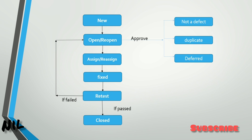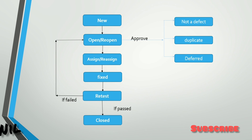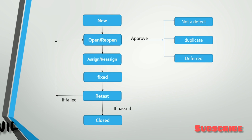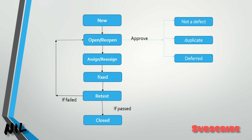After retest, if the bug is not fixed, it goes to the Reopen state. The Team Lead will then reassign it to the developer, who will fix it again. Then the tester will retest it with the same data. If the tester confirms the bug is fixed, it will be Closed — otherwise the cycle continues.